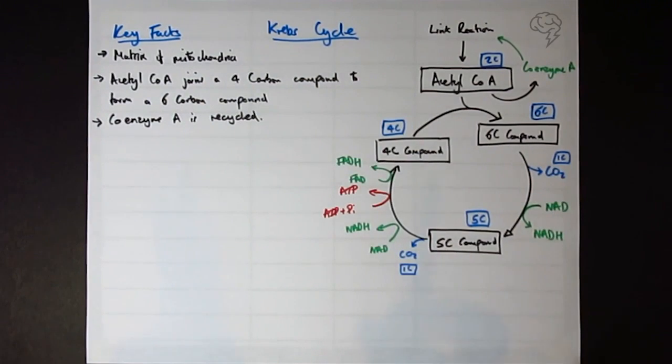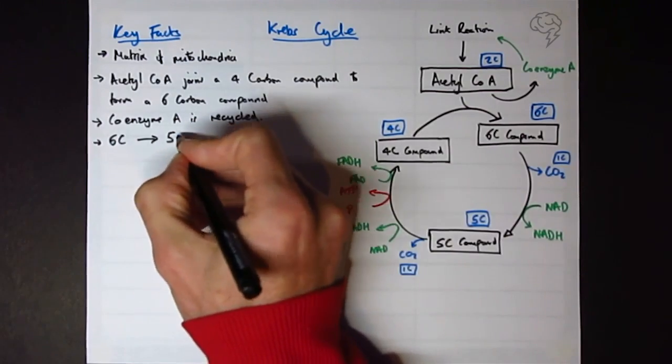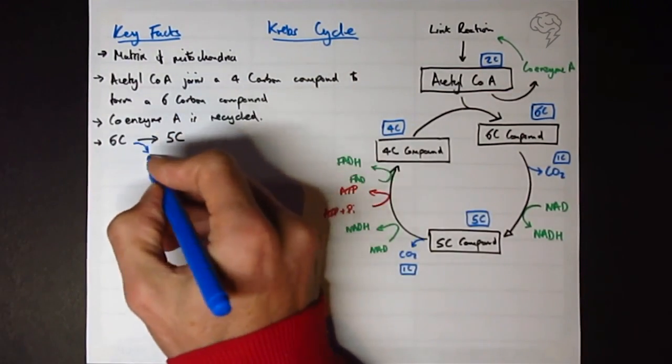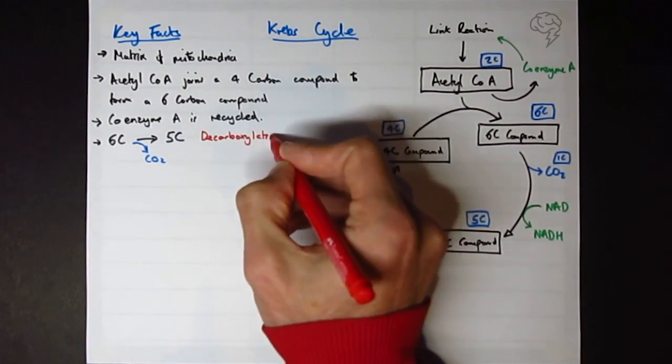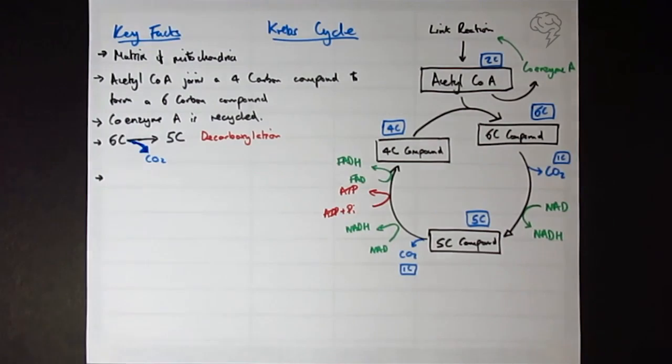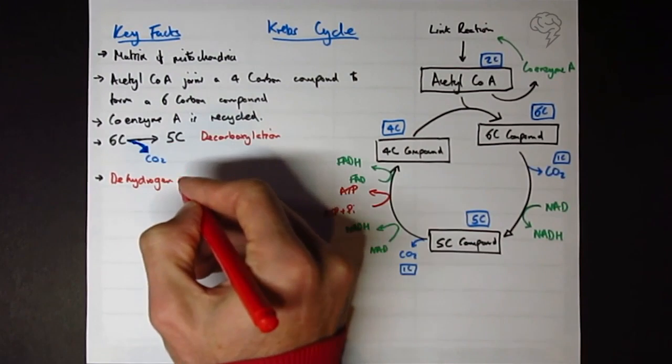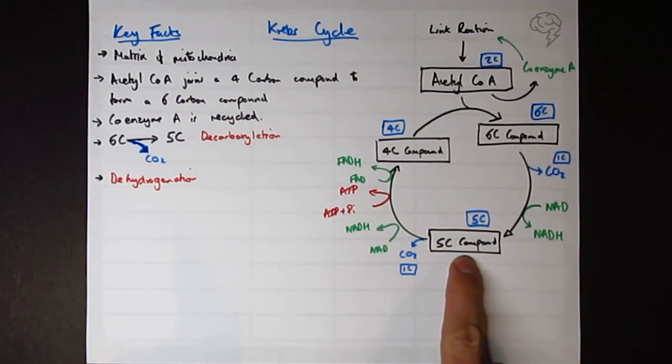What do we call this when we lose carbon dioxide from something? We call that a decarboxylation. Maybe I'll just do 6C to 5C with our CO2 coming out. So decarboxylation. Let's tidy that up. It's not the best. Really, I want that coming off the line. And we can also say that dehydrogenation takes place, which is when hydrogen is removed. So this carbon compound here, 5-carbon compound, has a hydrogen, and it's removed by the NAD to form reduced NAD.